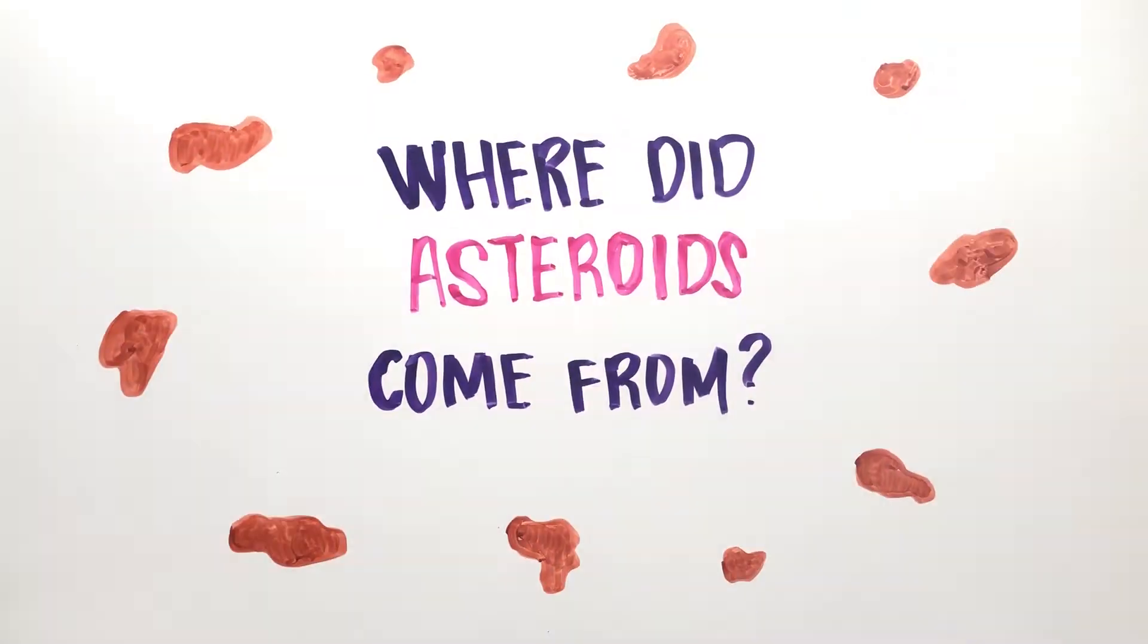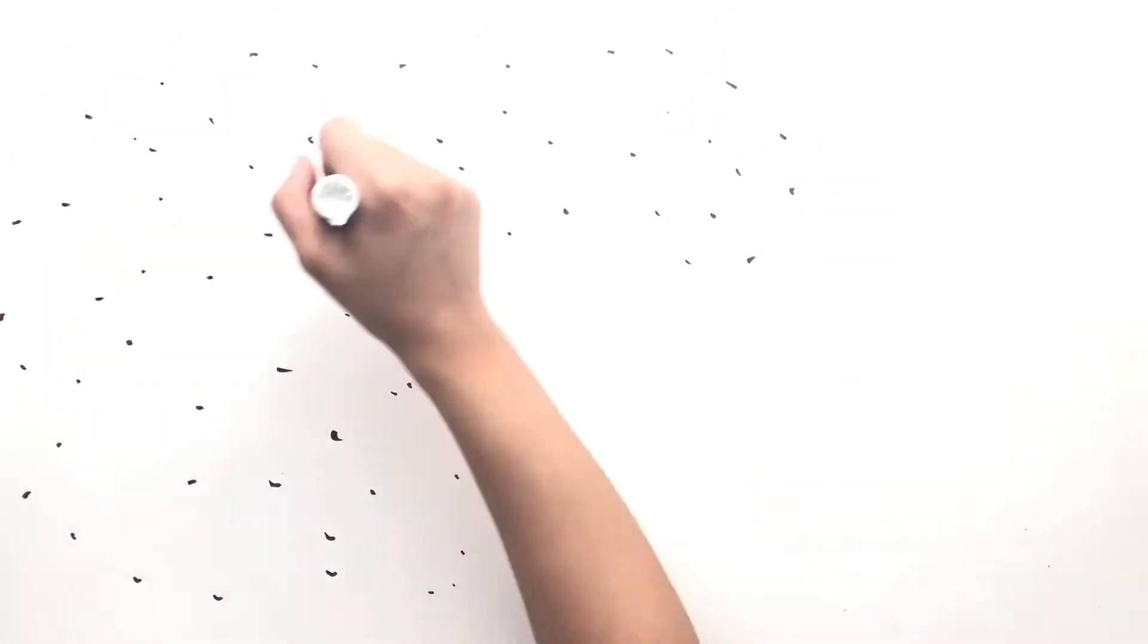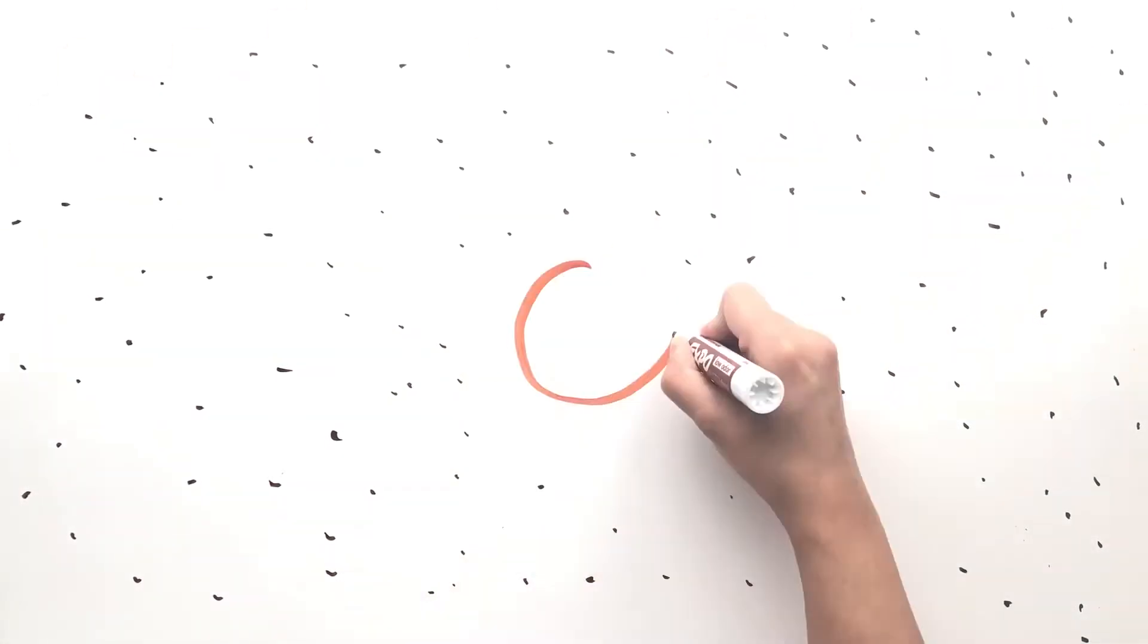Where did asteroids come from? The first asteroid was discovered by Giuseppe Piazzi, an Italian priest and astronomer in 1801, while making a star map and named it Ceres.